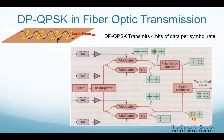Each laser beam can be split into two orthogonal polarizations — horizontal and vertical. If we apply QPSK modulation on each polarization, we get DP-QPSK, which stands for Dual Polarization Quadrature Phase Shift Keying. Since each QPSK transmits two bits of data per symbol rate, DP-QPSK transmits four bits of data per symbol rate.